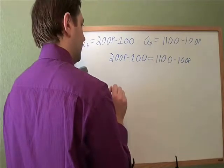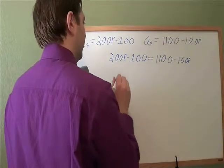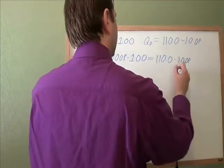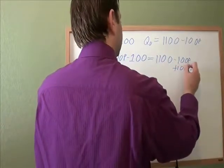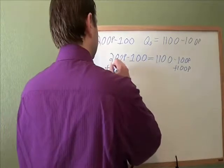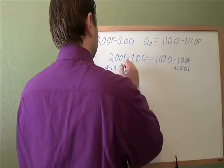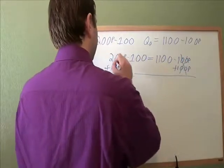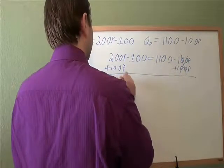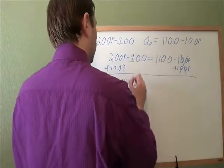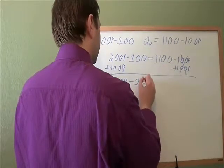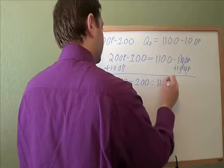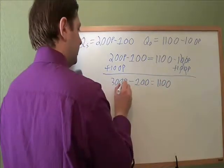And from here, it's the same solve for p steps we've been doing for a while now. We need to get the p's together on one side. So we're going to add 100p. Those cancel out. 200 and 100 gives you 300p. We still have that minus 100. And that's 1,100 there still.